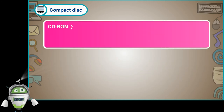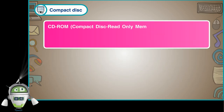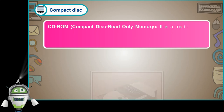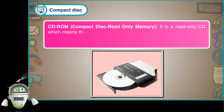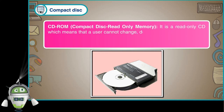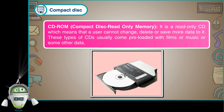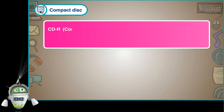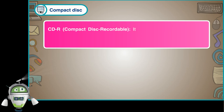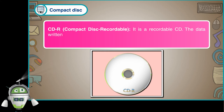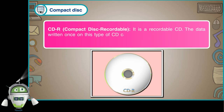There are three types of CDs. CD-ROM, or Compact Disc Read-Only Memory, is a read-only CD, which means that a user cannot change, delete, or save more data to it. These types of CDs usually come pre-loaded with films or music. CD-R, or Compact Disc Recordable, is a recordable CD. The data written once on this type of CD cannot be deleted.